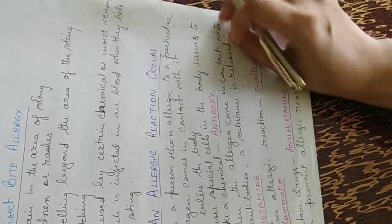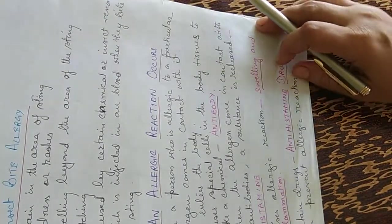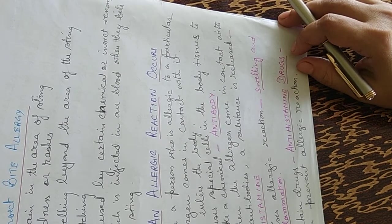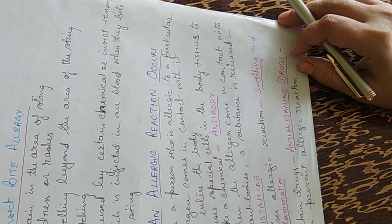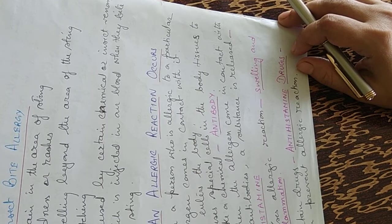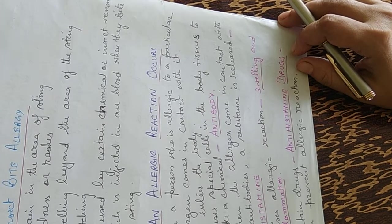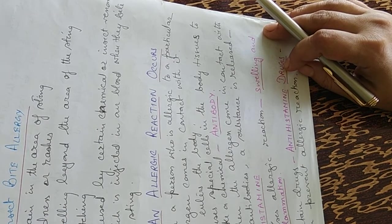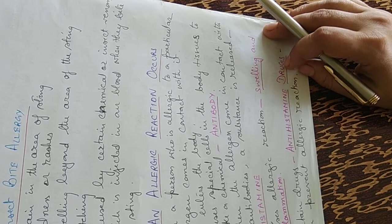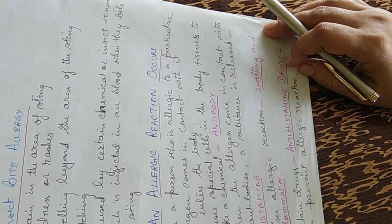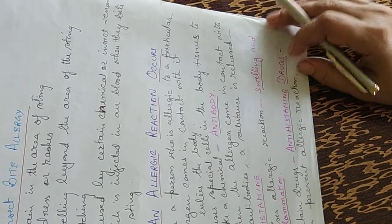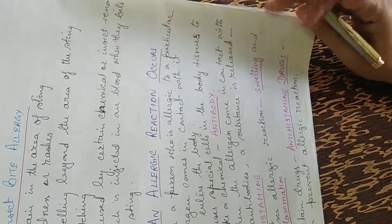How does allergic reaction occur? When a person who is allergic to a particular allergen comes in contact with it, it enters the body and causes special cells in the body tissues to make a chemical known as antibody. When an allergen comes in contact with the antibodies, it produces a chemical known as histamine, which causes allergic reactions like skin swelling and inflammation. There are certain drugs known as antihistamine drugs which can prevent these allergic reactions.